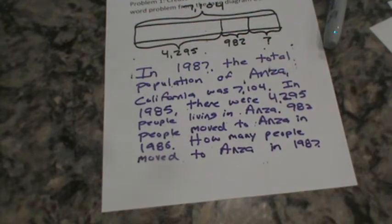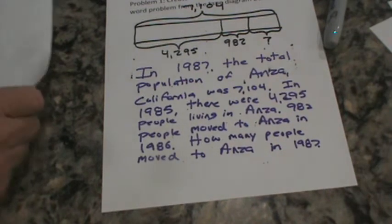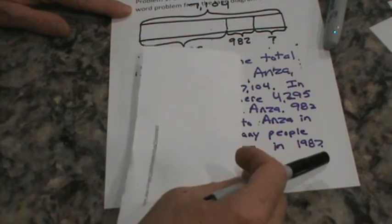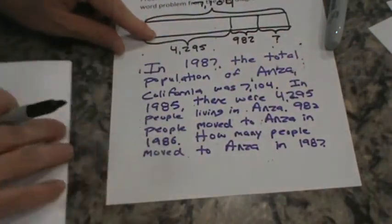So let's think about it. How could we go about solving this big problem? Well, for starters, I think we need to get another piece of paper. So let's start off by adding these two together. So 4,295 and 982. So the total amount of people living there in 85 and the people that moved there in 86. 4,295 plus 982. So go ahead and pause the tape and add that up.